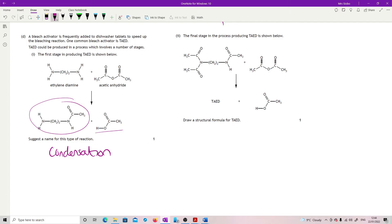Final stage in the process producing TAED is shown below. Draw a structural formula for TAED. So the reason I tried to pull it to the side was so that we could see what was happening in each of the stages. So what we've got here, we had to start off with ethylenediamine.